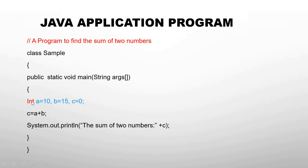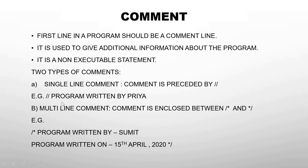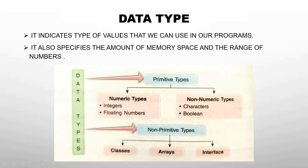When you see 'int', you know automatically that the value is of integer type, how much space it occupies in memory — 4 bytes — and what range of numbers can be assigned. So data type has two purposes: it indicates the type of value we can use, and it specifies the amount of memory space and range of numbers.